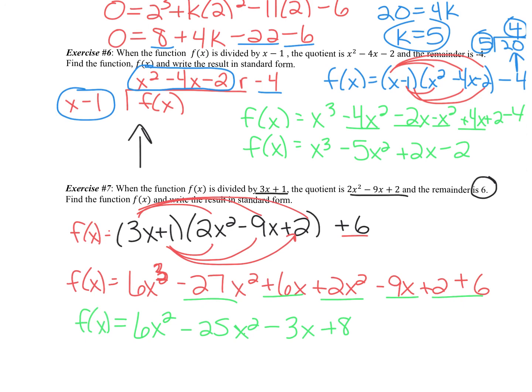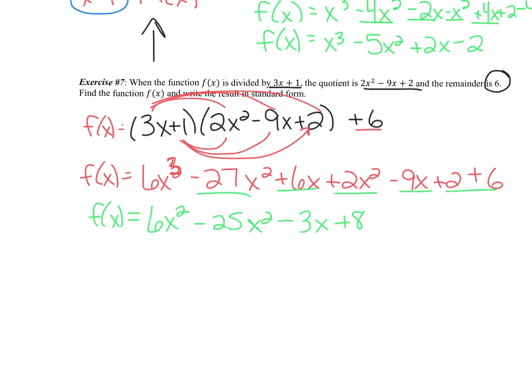To summarize this problem, that means if we went back and we took f of x, I'm just going to write it down again here, and we divided it by 3x plus 1, we should get 2x squared minus 9x plus 2 with a remainder of 6. So just like so many things in algebra, if you go back through, if we actually did do this long division, you can check and just make sure your answer is correct.